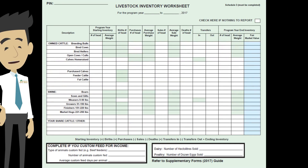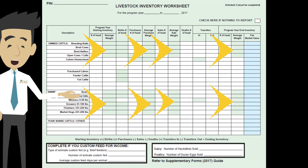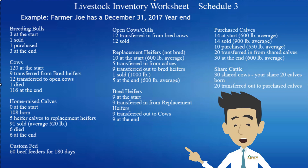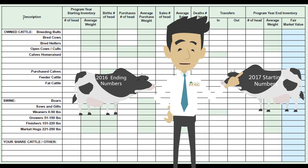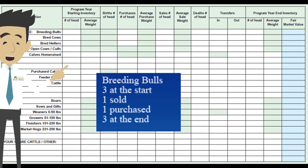This is what your 2017 livestock inventory worksheet looks like. Remember, you do not need to enter information into the green shaded areas. Using the information from our tips video, this is the livestock inventory information that Farmer Joe came up with for 2017. Remember, when filling out your 2017 livestock inventory worksheet, your 2016 ending numbers must match your 2017 starting numbers. Let's get started.